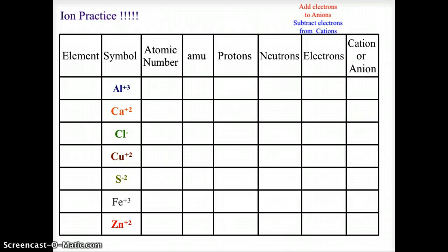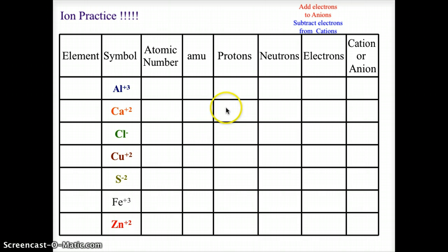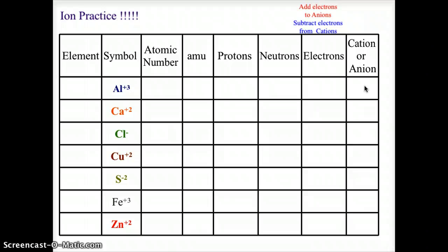Now let's look at a chart where I've given you an element symbol with a charge. You're going to fill in the element name, the atomic number from the periodic table, the standard AMU, the proton number, neutron number, electron number, and whether it is a cation (C) or anion (A). Go ahead and download the PDF available on Blackboard, fill it in, and then come back to see how you did.